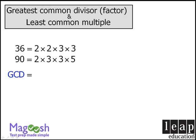From here, we'll circle all factors that these two numbers have in common. So they both have a 2 in common. We'll write this down here. They also share a 3 and another 3.